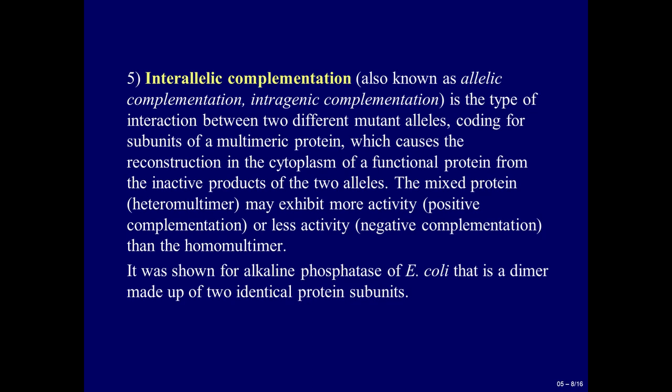The fifth type is interallelic complementation, also known as allelic complementation or intragenic complementation. This is the type of interaction between two different mutant alleles coding for subunits of a multimeric protein, which causes reconstruction in the cytoplasm of a functional protein from the inactive products of the two alleles. The mixed protein — a hetero-multimer — may exhibit more activity (positive complementation) or less activity (negative complementation) than the homo-multimer. This was shown for alkaline phosphatase of E. coli, which is a dimer made up of two identical protein subunits.